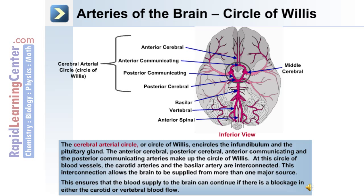At this circle of blood vessels, the carotid arteries and the basilar artery are interconnected. This interconnection allows the brain to be supplied from more than one major source, and this ensures that the blood supply to the brain can continue if there is a blockage in either the carotid or the vertebral blood flow.